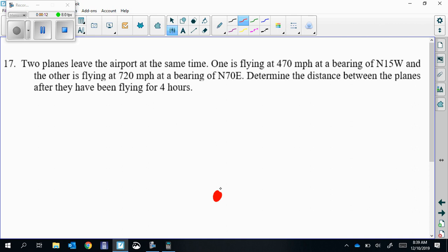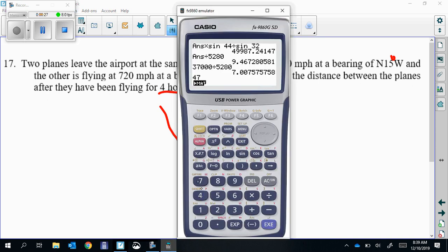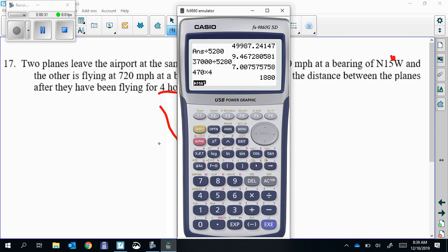Northwest, 15 degrees. That should be a degree there, it's not labeled. 15 degrees. 470 miles per hour, but it talks about going four hours. So 470 miles every hour times four hours, 1880.